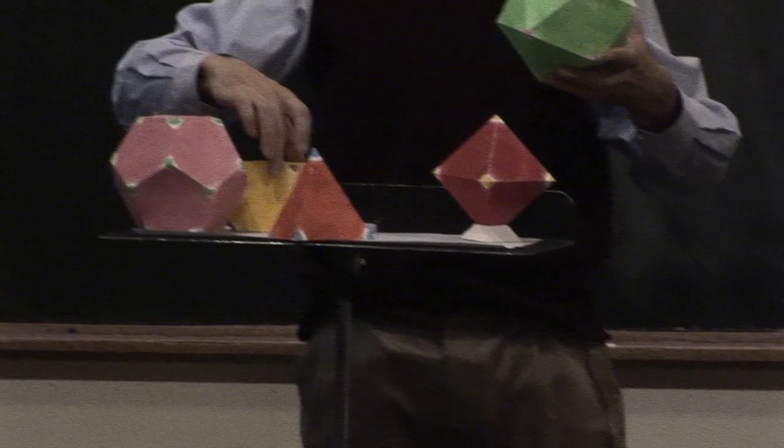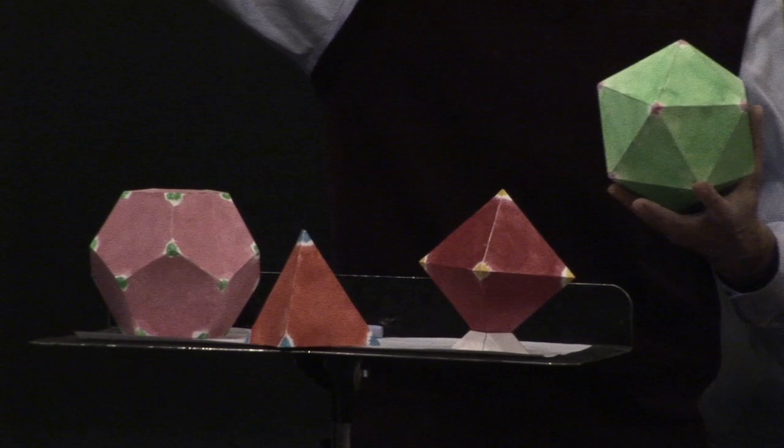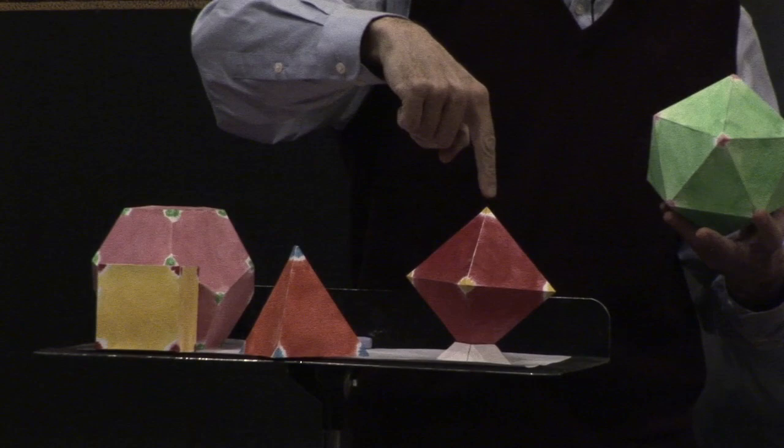This is the dodecahedron. And this is the icosahedron. Could you see that these were opposites of each other? Six faces, eight points. Six points, eight faces.